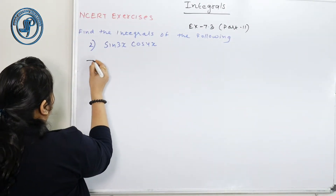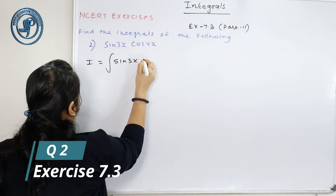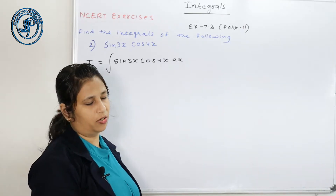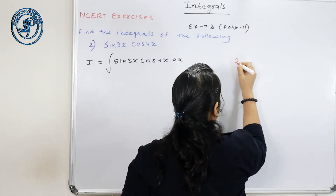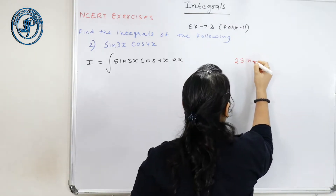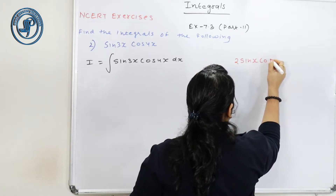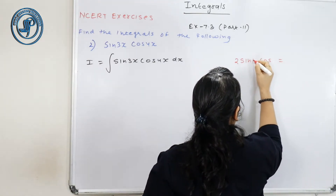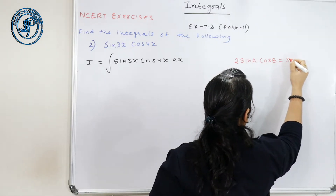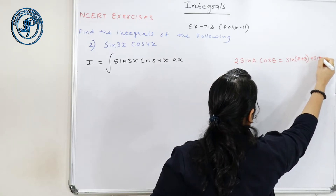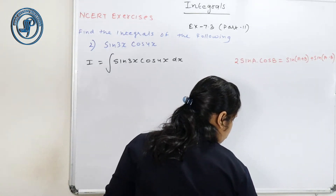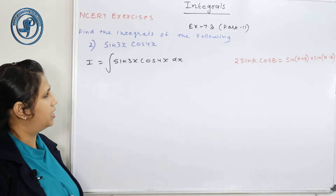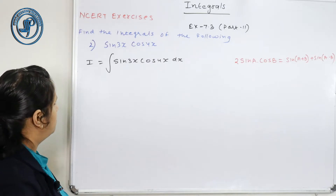Now the next question: ∫sin(3x)·cos(4x) dx. The trigonometric formula we use here is: 2 sin A cos B = sin(A+B) + sin(A−B). This is the product formula. So 2 sin A cos B can be written as sin(A+B) + sin(A−B).